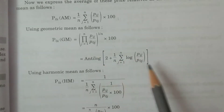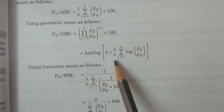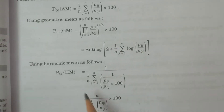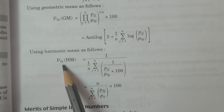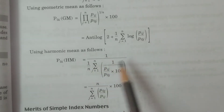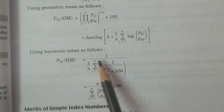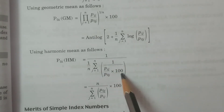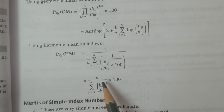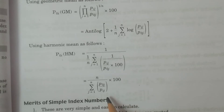The geometric mean can be calculated by antilog of (1/N) into summation log(PIJ/P0J). By using harmonic mean: P0I (HM) = N divided by summation (P0J/PIJ) into 100, which can also be written as summation Wj divided by summation Wj into P0J/PIJ into 100.